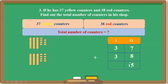Now we add the 10's: 3 plus 3 is 6, and we add the carried-over 1, giving 7. So the answer is 75. We added 37 and 38: first we added 7 plus 8 and got 15, then moved the 1 from the 1's position to the 10's position, and then added the 10's numbers to get 75.